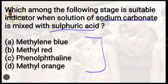Methyl orange is a pH indicator. It is mostly used in acid-base titrations, especially when acid is involved. That is why methyl orange is most commonly used in such titrations.